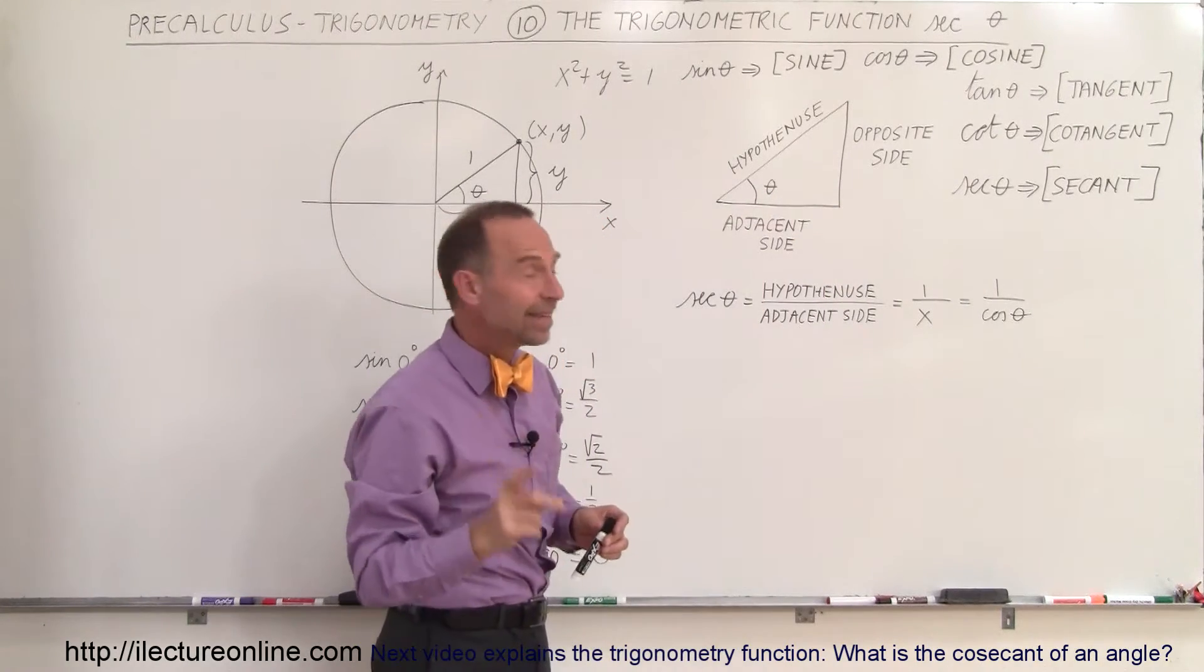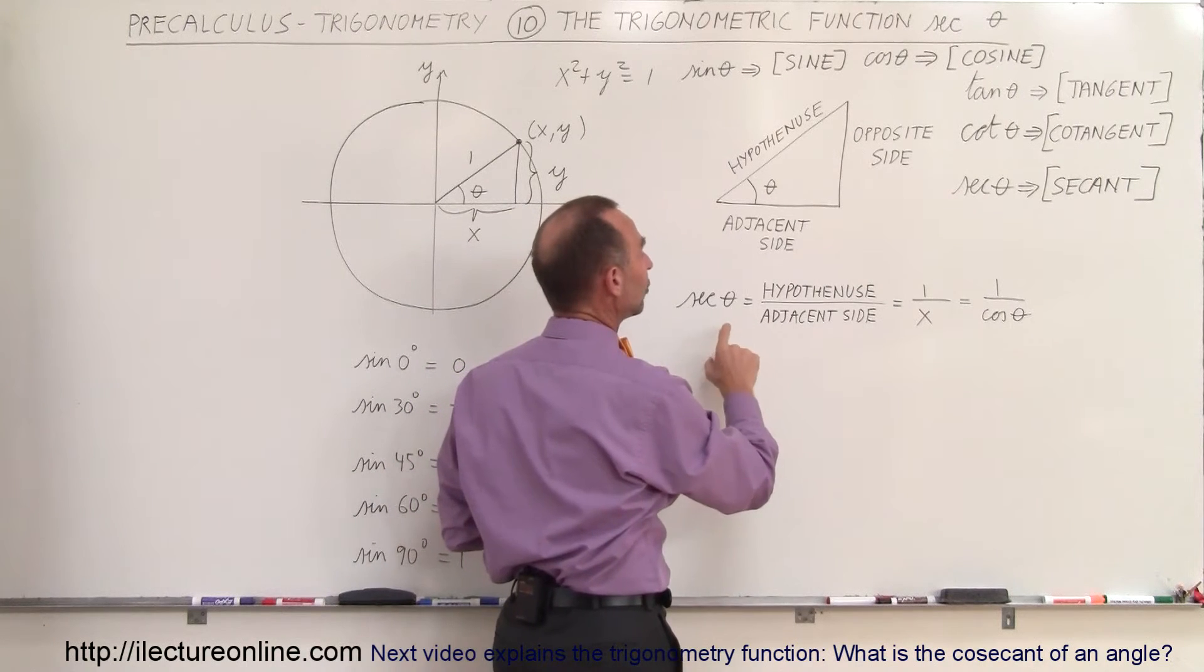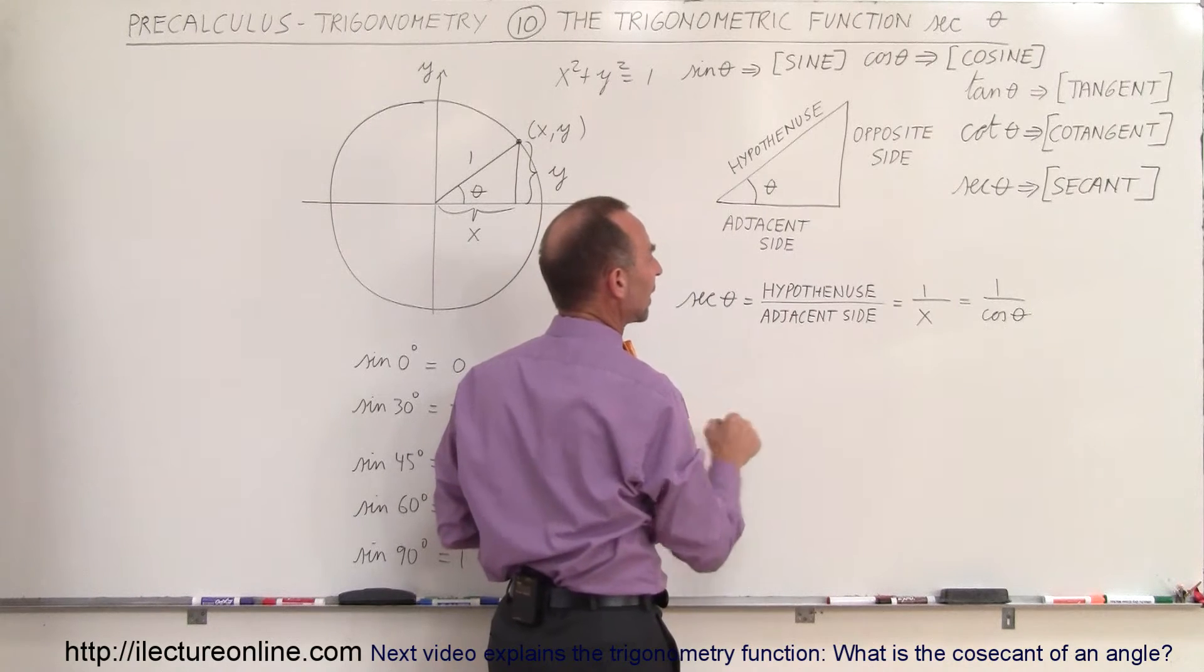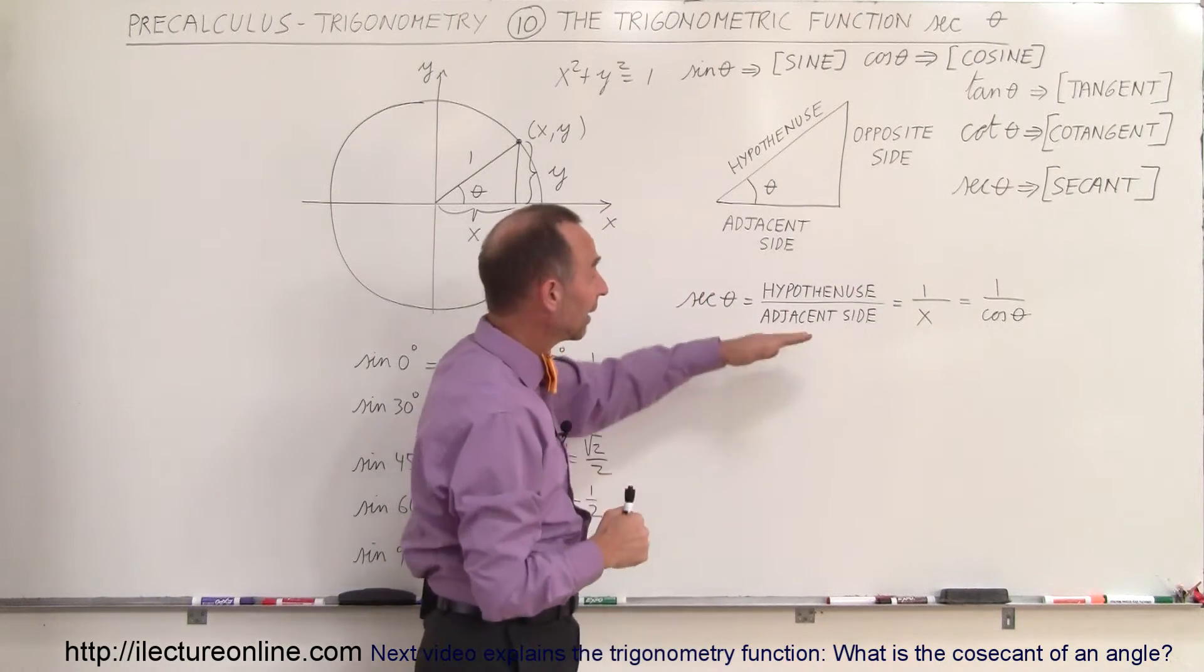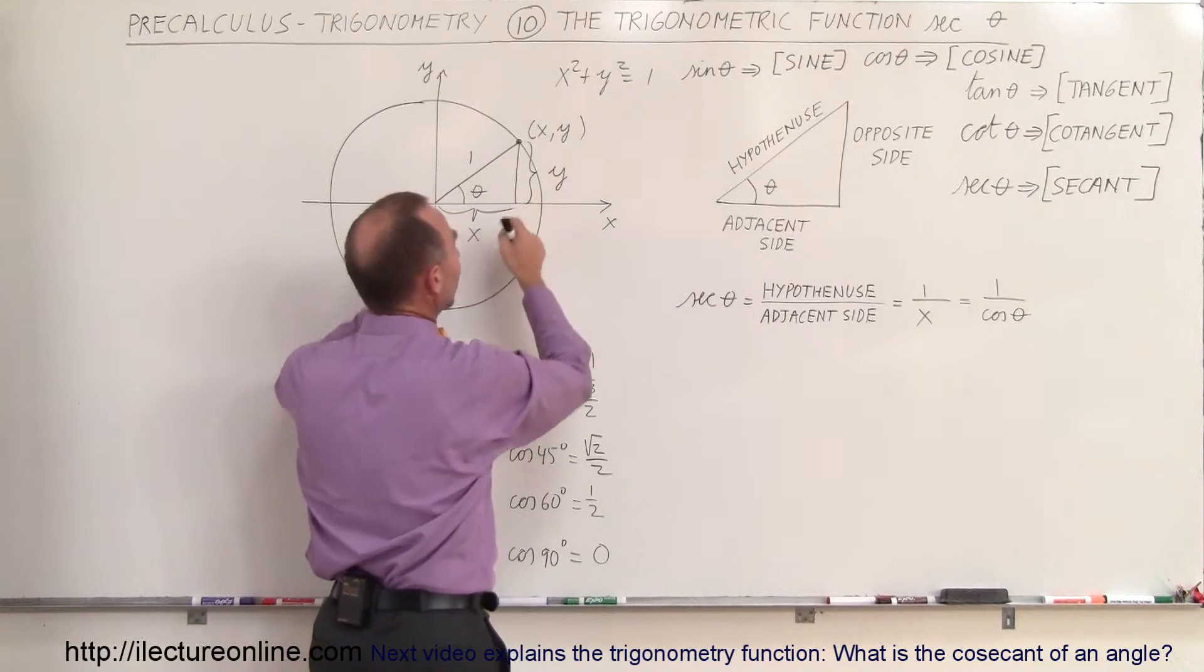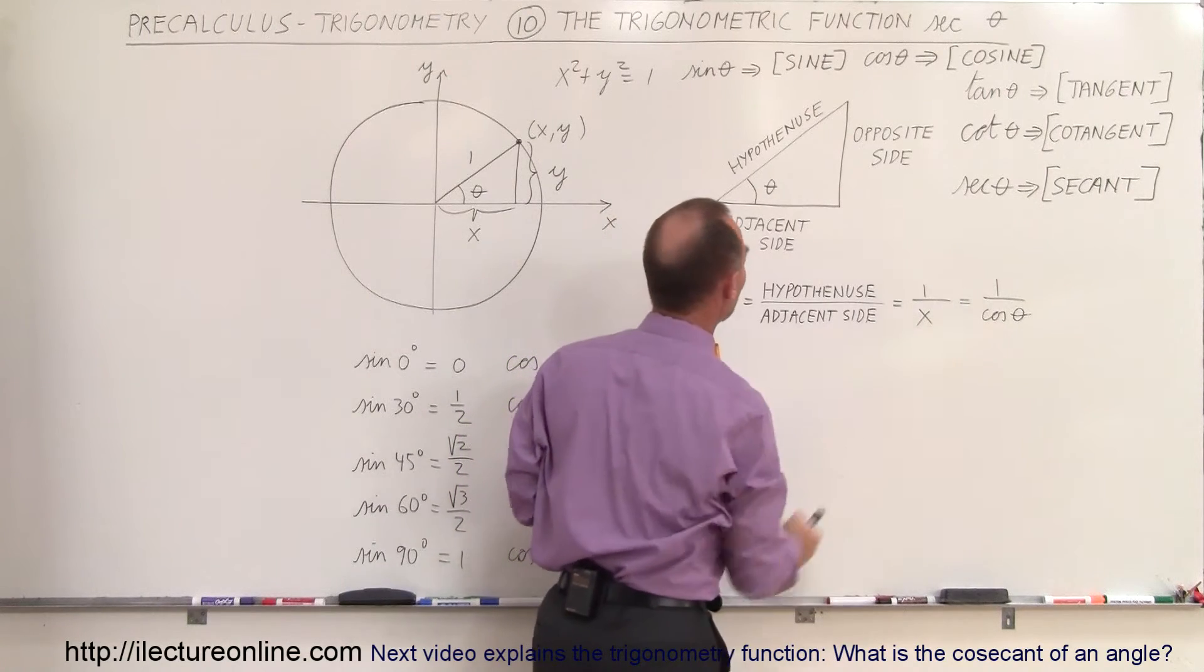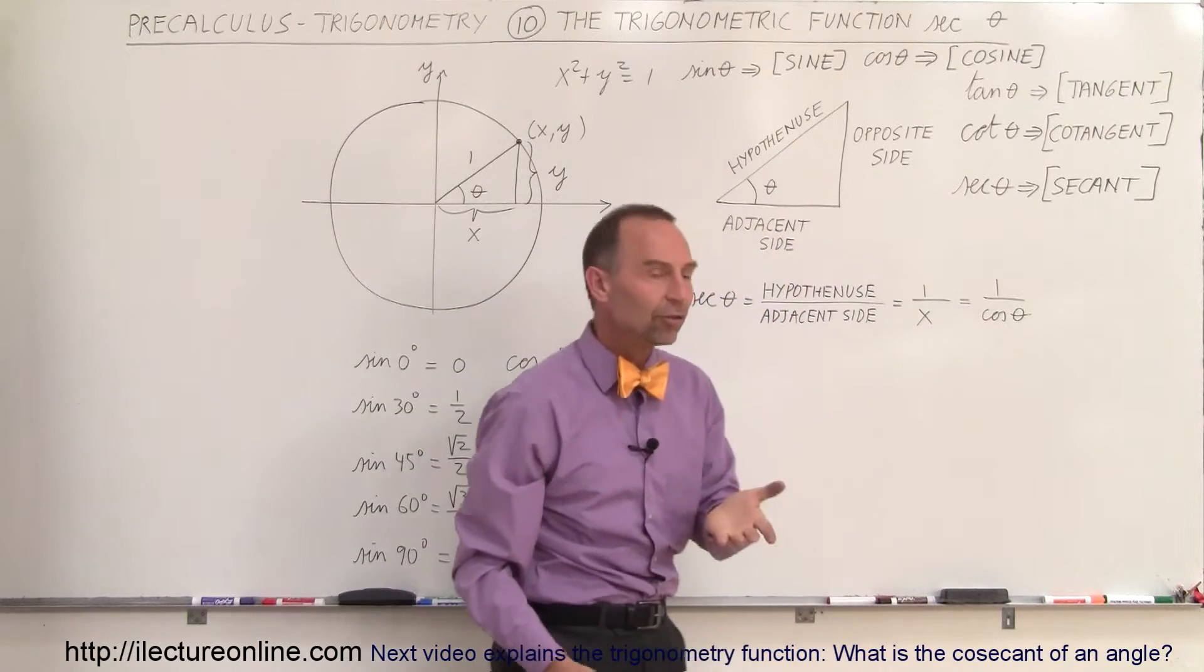Notice that the secant of theta, sec θ, is equal to the ratio of the hypotenuse divided by the adjacent side. That would be 1 divided by x, because the hypotenuse has length 1 and the adjacent side is the x value of that point. Since x equals the cosine of theta, we can see that the secant of theta is simply the inverse of the cosine of theta.